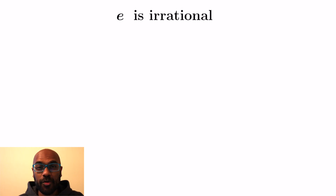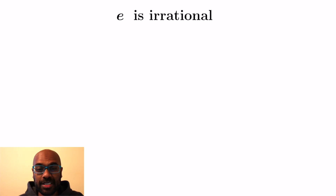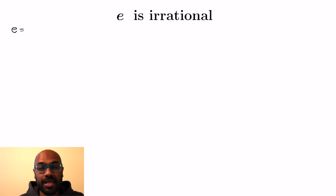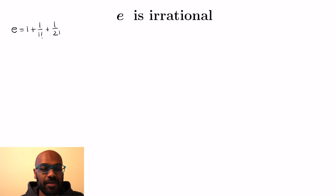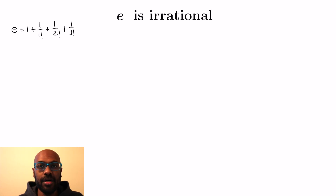In today's video, we're going to prove that the number e — the number we see in calculus and know about from logarithms — is actually an irrational number, meaning that it's not the quotient of two integers. We're going to use the power series expansion of e a lot in this video.